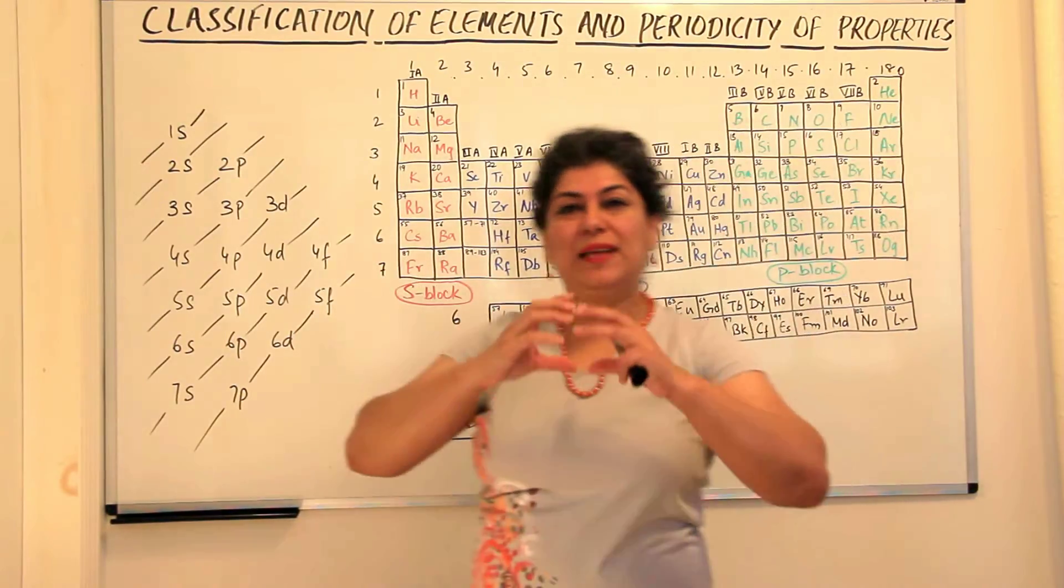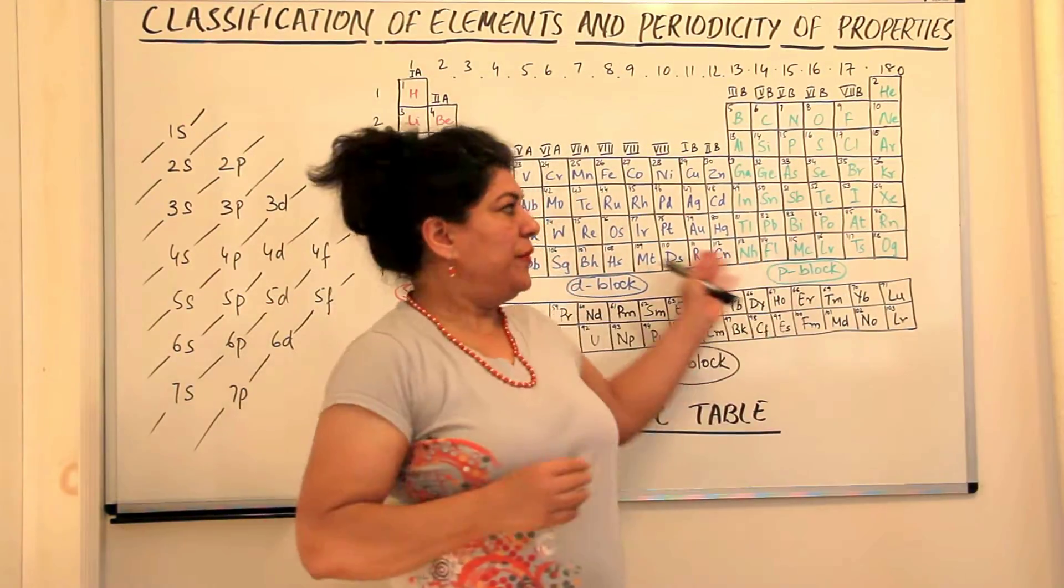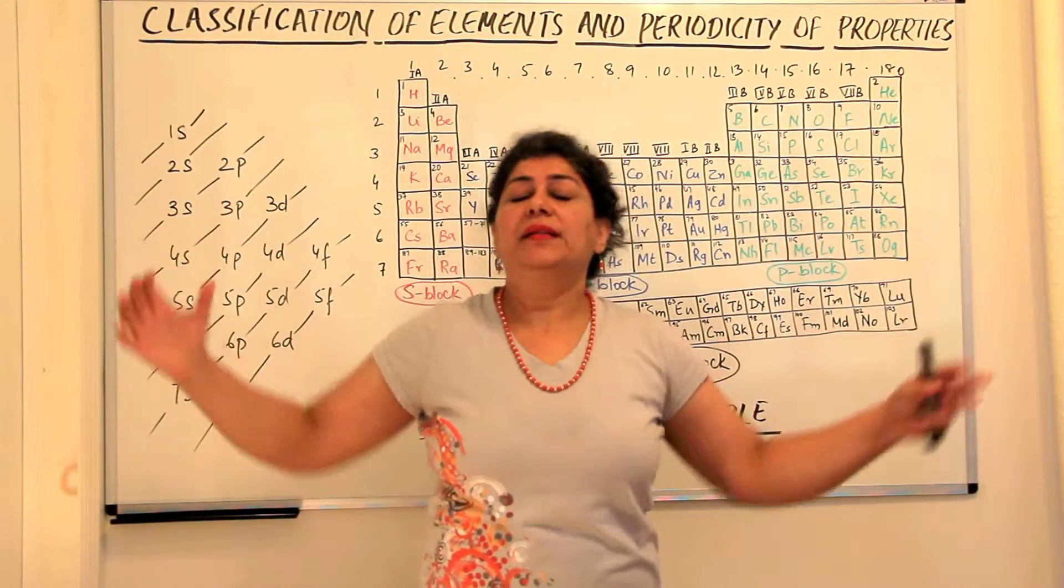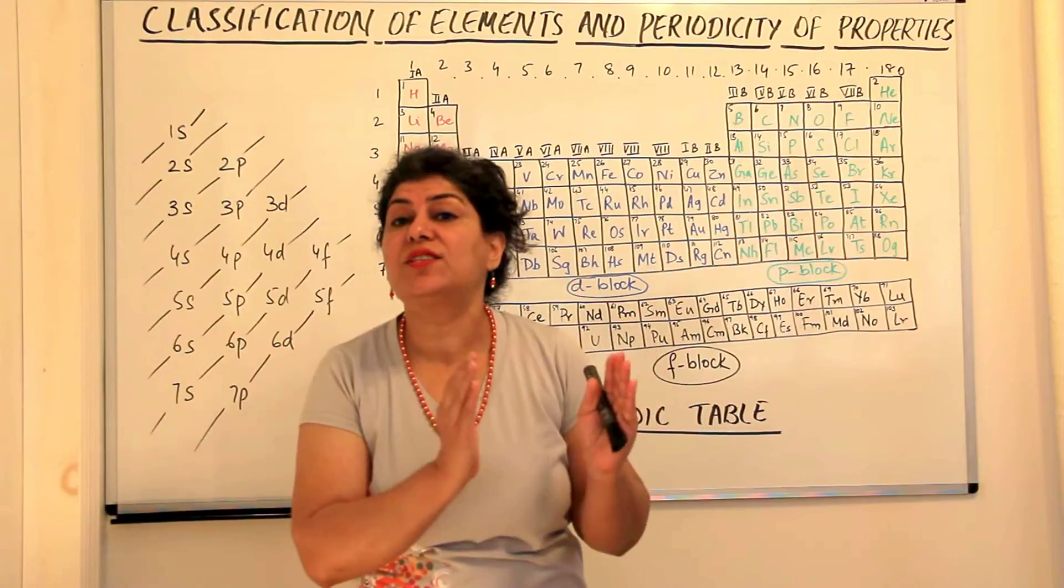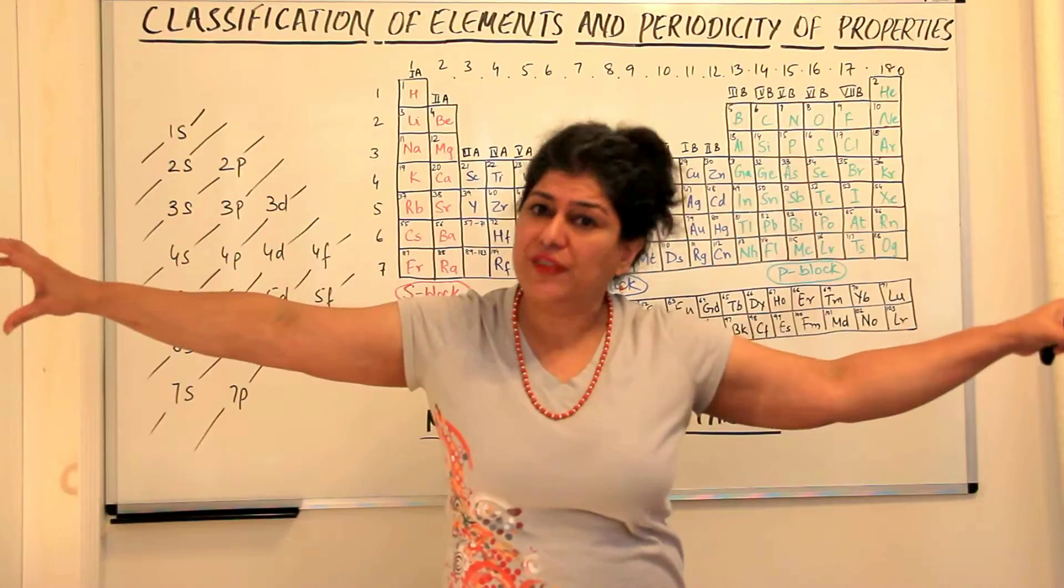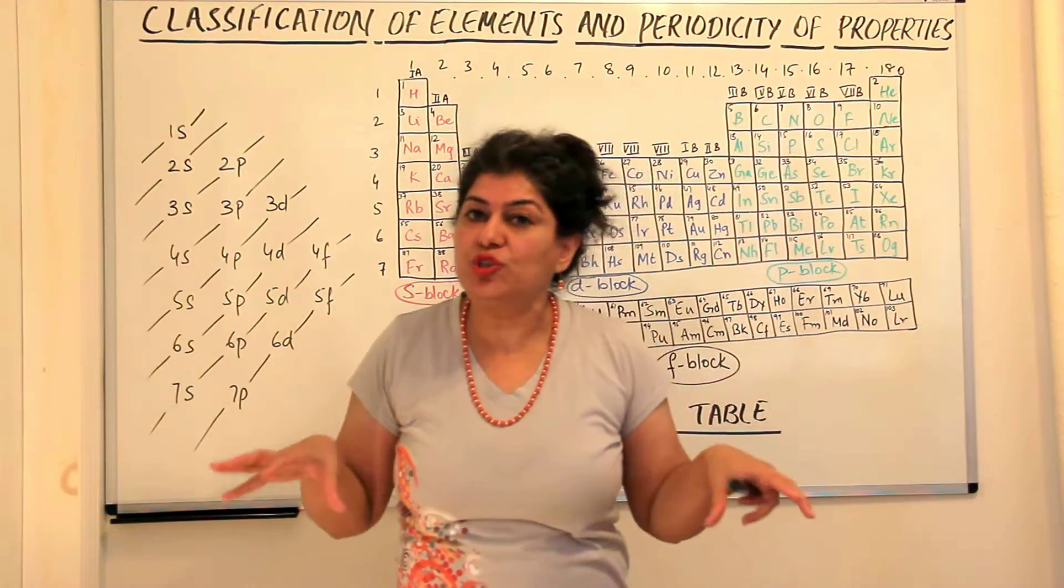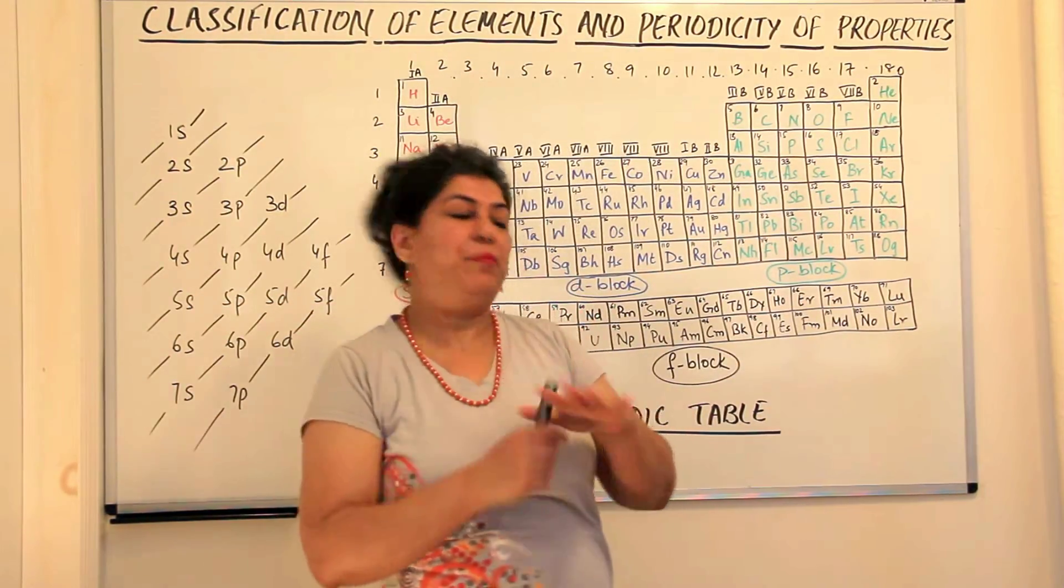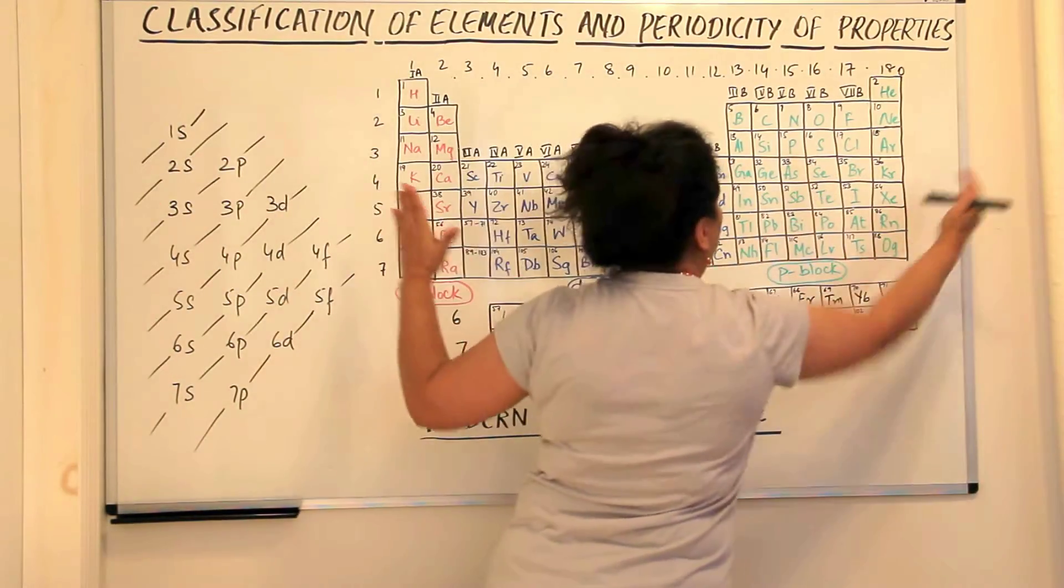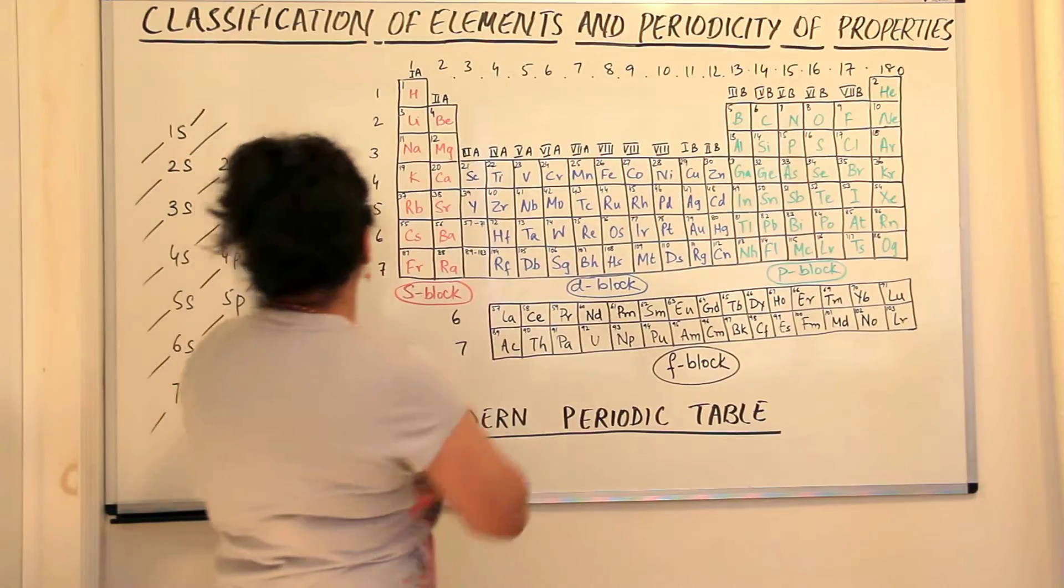Now that would make the periodic table, it already is called the long form, it would make it so much longer that it would be difficult to accommodate these 14 elements and to write the periodic table that is so uncomfortably long. So what was the solution that was found? Instead of writing these 14 elements here and making this wider by 14 elements...